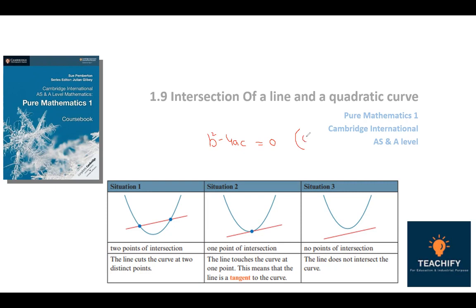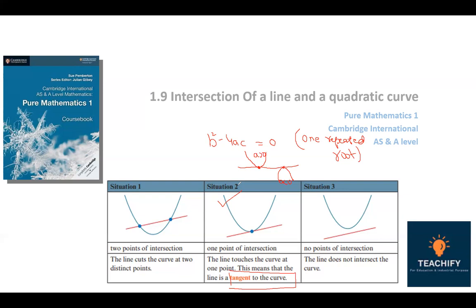When b squared minus 4ac equals zero, there is only one repeated root value. In this case, the point touches the maximum point on the x-axis — that is, the peak value. This applies when a is greater than zero and when a is less than zero. There is only one point of intersection, meaning the line touches the curve at one point. This means the line is tangent to the curve.